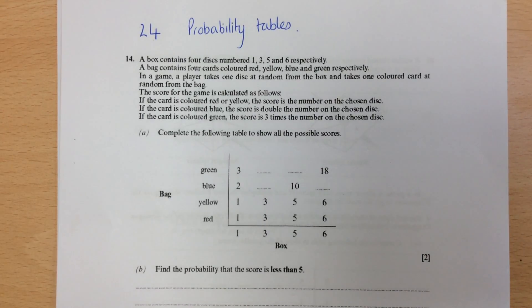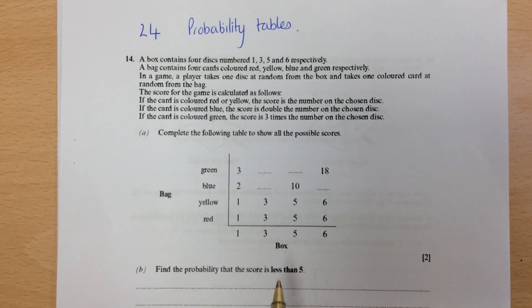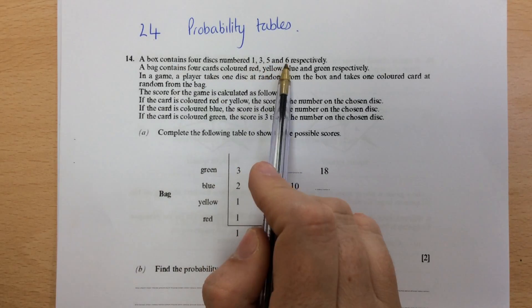Section 24, Probability Tables. It's important to read the information at the top to know how you're going to fill in your table. So a box contains four discs, one, three, five and six.